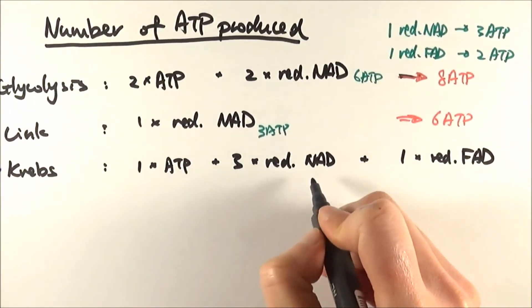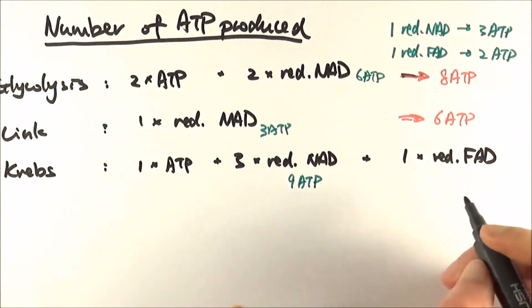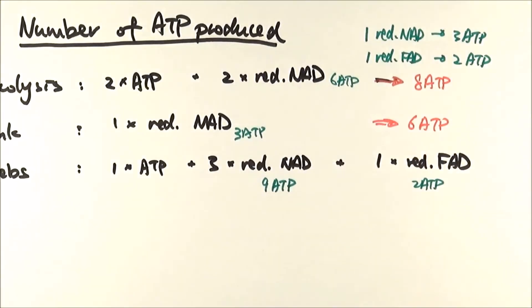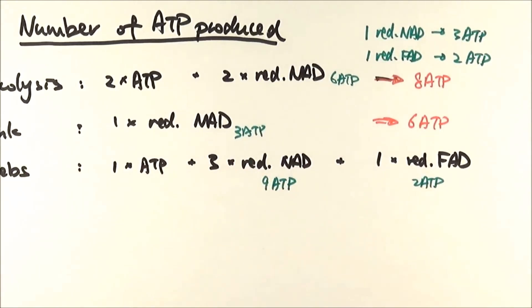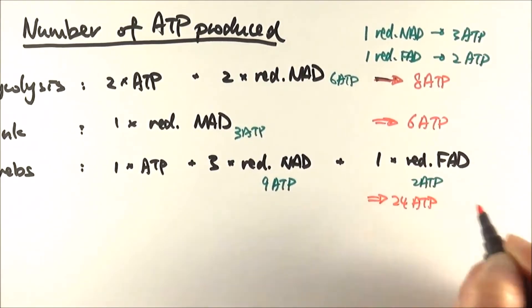And here, reduced NAD, again, for each of them make 3, so we make 9 ATP. And from 1 reduced FAD, we made 2. From 1 pyruvate molecule, which enters this reaction, we've made 12 ATP from Krebs, but because we're doubling up, we made 24 ATP in total.